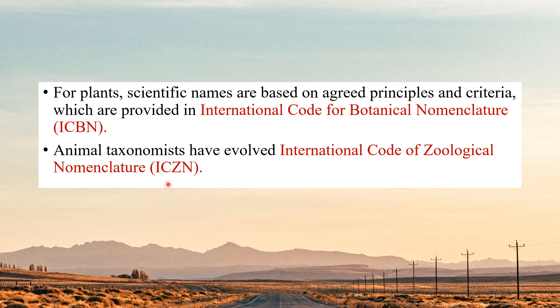Now, two very important abbreviations in this chapter: ICBN and ICZN. This is one of the most repeated questions from this chapter. For plants, scientific names are based on agreed principles and criteria provided in ICBN. For animals, taxonomists evolved ICZN — the International Code of Zoological Nomenclature. Most of the time they will confuse you by swapping 'code' with 'council,' so remember clearly what ICBN is and what ICZN is.